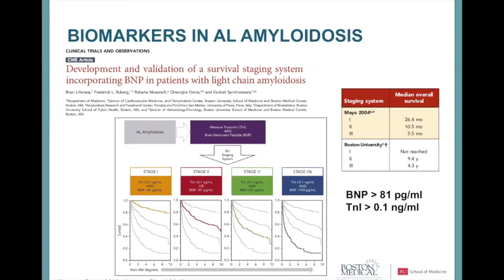Biomarkers really predict survival in AL amyloidosis. There are various staging schemes using BNP, NT-proBNP, and troponin. We recently published a Boston University staging system using BNP and troponin I — based on Dr. Dispenzieri's original Mayo Clinic work with NT-proBNP and troponin T — identifying four groups. When Dr. Dispenzieri first described this in 2004, stage 2 patients had a median survival of only about 10 months.